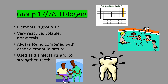Next up, we have group 17 or 7A — these are the halogens. Halogens are nonmetals and they are very reactive and volatile. They most commonly make compounds with group 1 because halogens have seven valence electrons and want to take one more valence electron to become stable. Group 1 — the alkali metals — has one to give, so halogens and alkali metals often pair up. They're always found combined with another element in nature. They're commonly used as disinfectants and to strengthen your teeth, like fluorine.